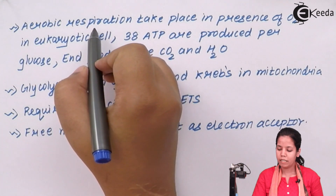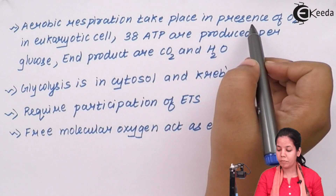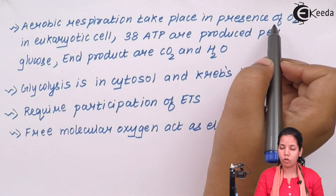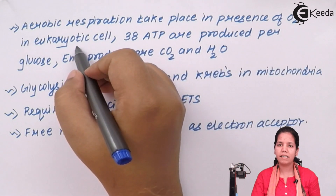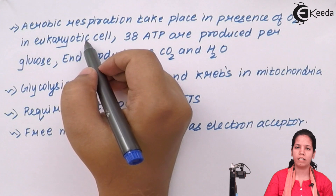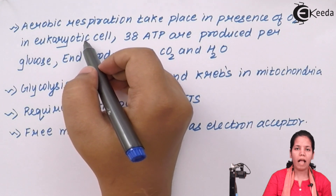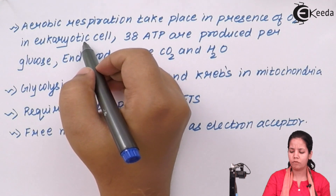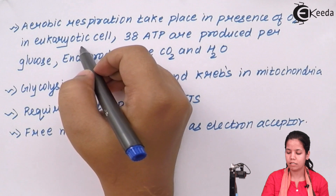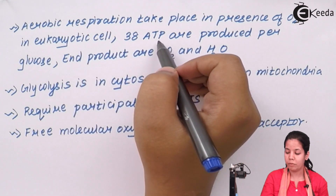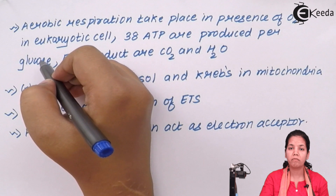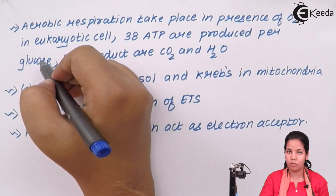The aerobic respiration process takes place in the presence of oxygen — it needs oxygen to carry out. It basically takes place in eukaryotic cells, meaning human beings, plants, animals, and larger multicellular organisms. 38 ATP or energy currencies are produced per glucose molecule in aerobic respiration.